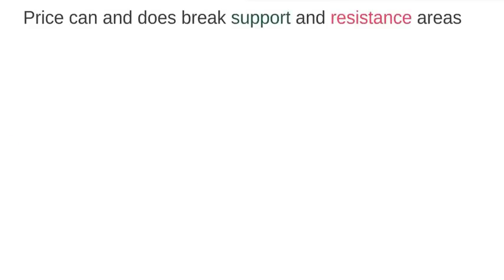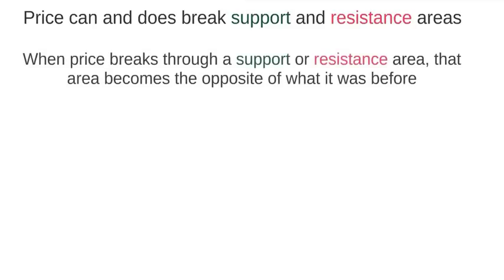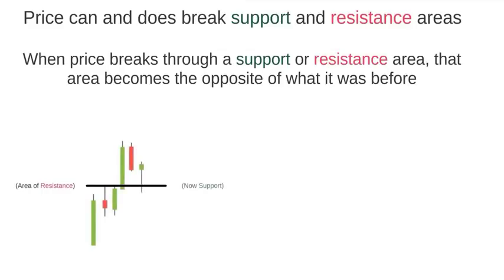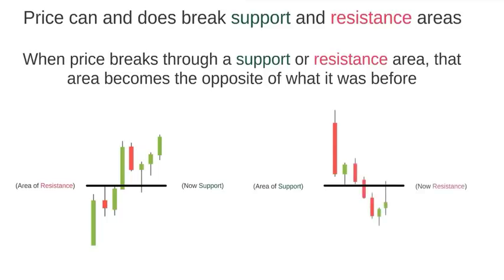Price can and does break through these price areas all the time. Typically, when price breaks through a particular price area identified as either support or resistance, it will become the opposite to what it was before. So if price is rising and it breaks through an area of resistance, that resistance area now becomes a support area. And the same is true in reverse — if price is falling and breaks through support, that support becomes resistance.